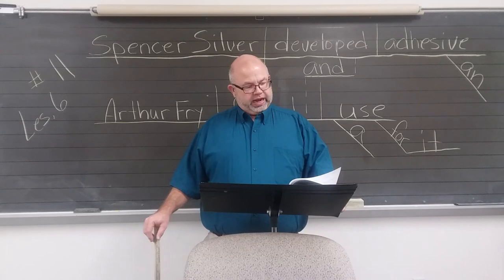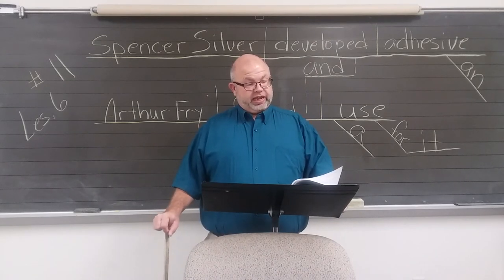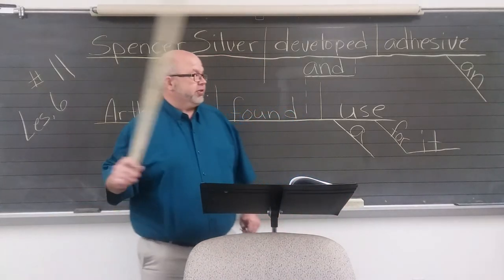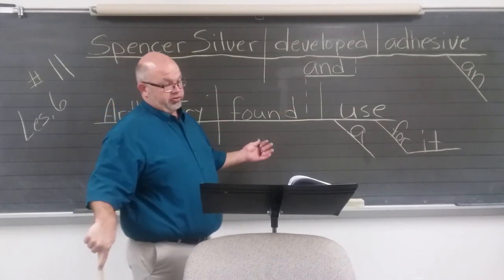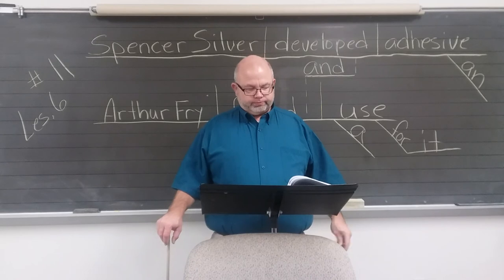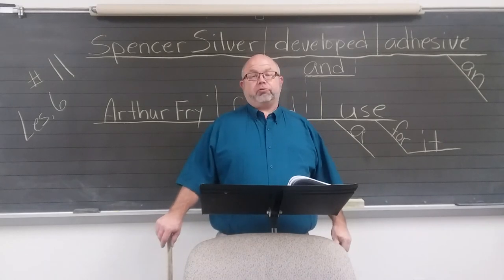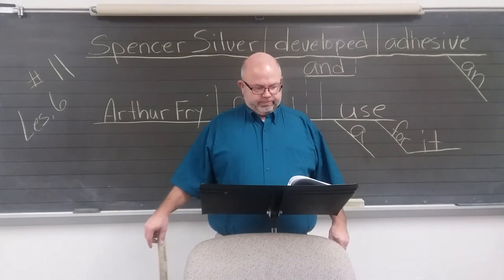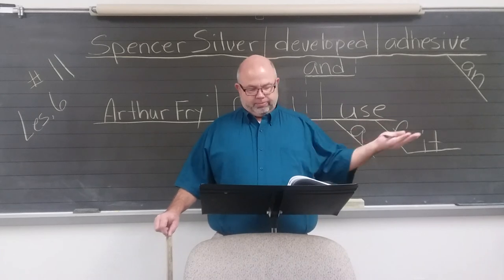In numbers four through eight you are supposed to recognize whether they are compound or complex sentences — underline the verbs twice, the subjects once, and then label it compound or complex. A compound sentence has a conjunction connecting two independent clauses that would each stand alone. A complex sentence has an independent clause with one or more dependent clauses. Remember how to diagram complex sentences: a subordinating conjunction goes on the dotted line, and a relative pronoun is often the subject of the adjective clause on the bottom part of your diagram.